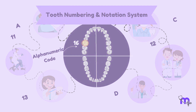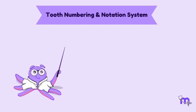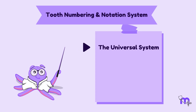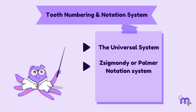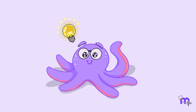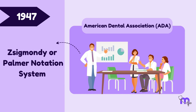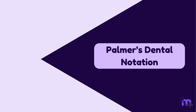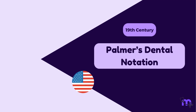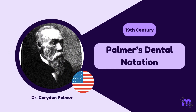These systems provide a unique alphanumeric code for each tooth, specifying its location within the oral cavity. The various tooth numbering systems used worldwide are the Universal system, the Sigmondi or Palmer notation system, and the FDI system. In 1947, a committee within the American Dental Association officially endorsed the Palmer notation system as the preferred method for numbering teeth.